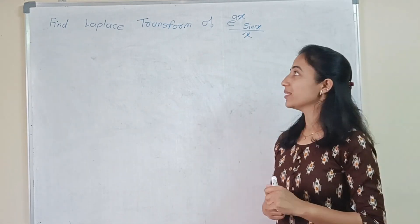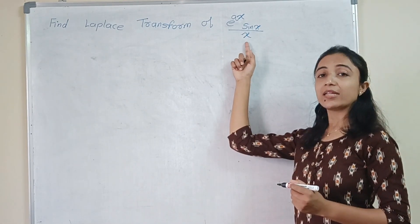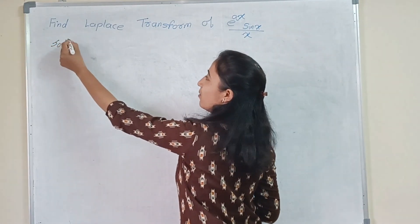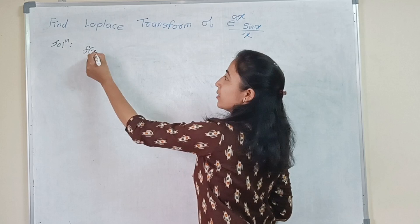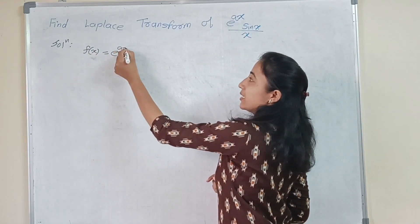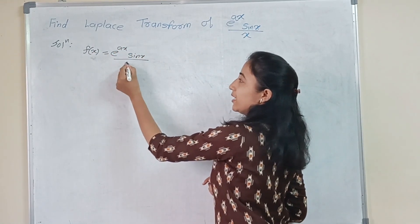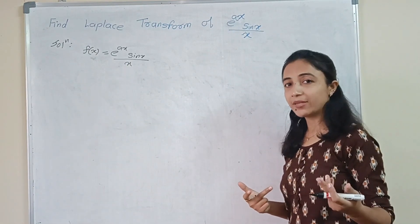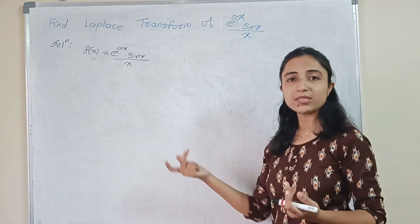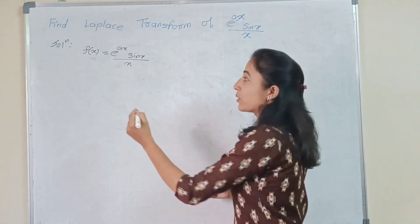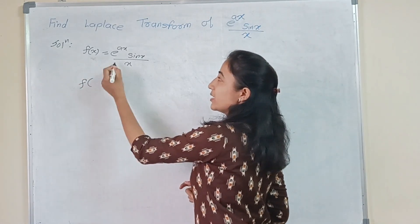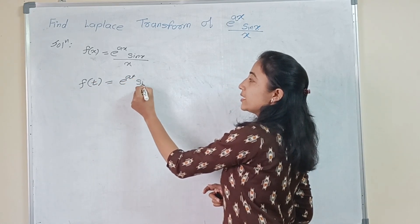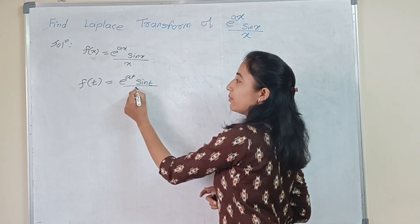Now let's see how to solve this example. Here our function is in the form of x, so we can write this function as f(x) = e raised to the power ax into sin x divided by x. We know that we always apply the Laplace transform to a function of t, so we can replace the variable x by t. Therefore f(t) = e raised to the power at, times sin t, divided by t.